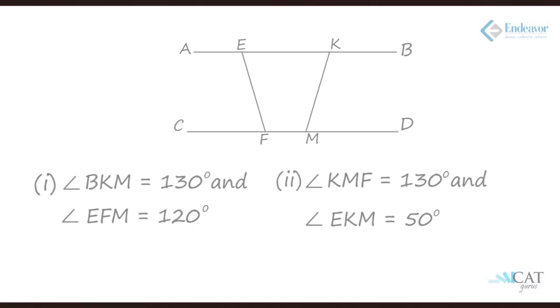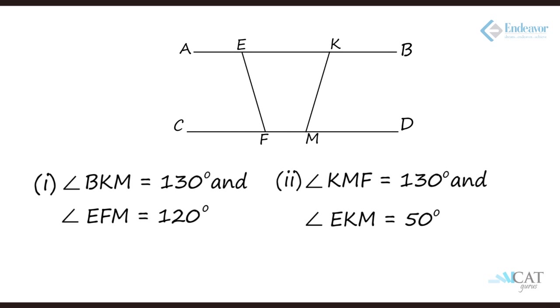Statement two gives: angle KMF = 130° and angle EKM = 50°. Both of these angles relate to the same line KM — neither provides data about line EF. So we cannot conclude anything about EF from statement two alone. These were the approaches to solving data sufficiency questions. The key is to remember the basics: if a data sufficiency question is quantitative, revisit the relevant topic, recall the fundamentals, and then apply them carefully — it is tricky, not difficult.